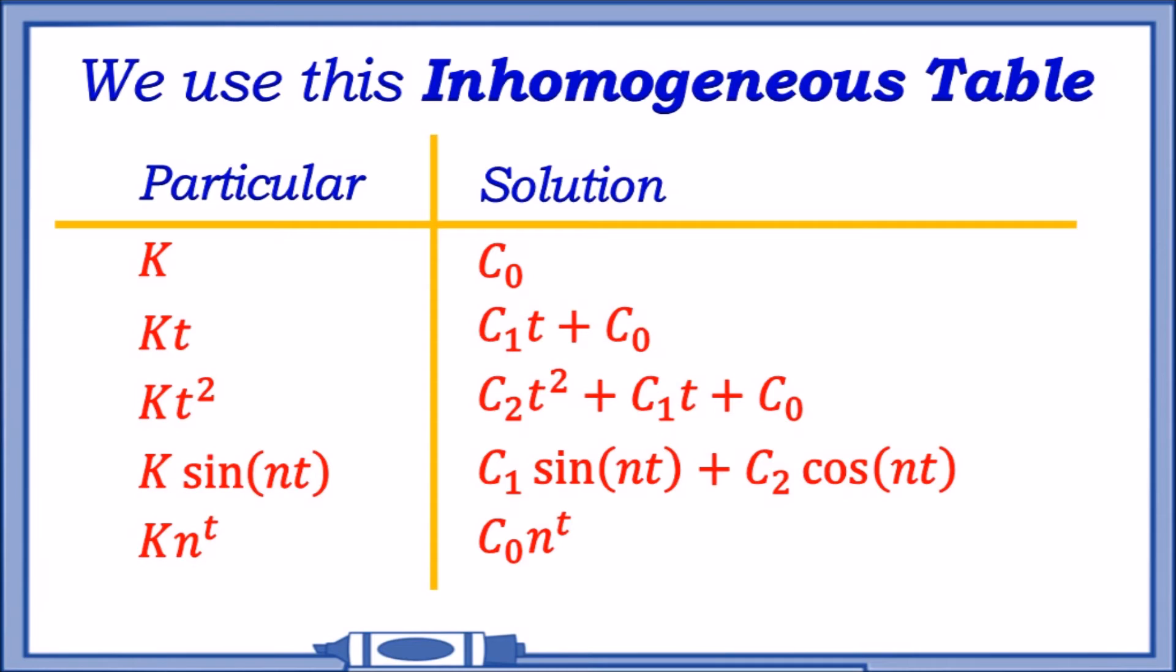Lastly, we have K times a constant to power t, which will be some new constant with the same power t. In our case, we're dealing with Kt, so the particular solution will be a constant t plus another constant.